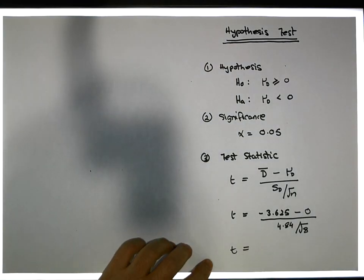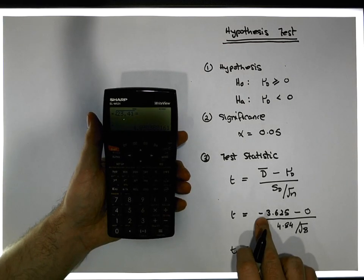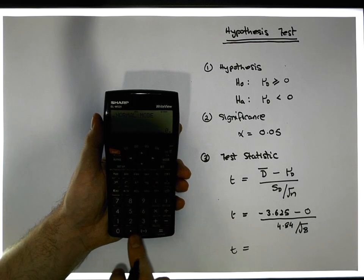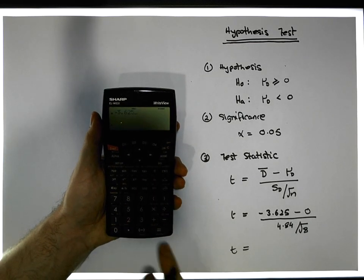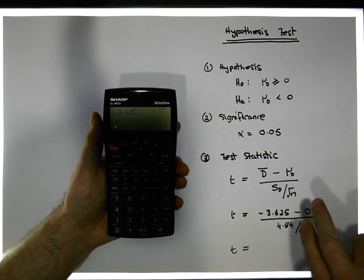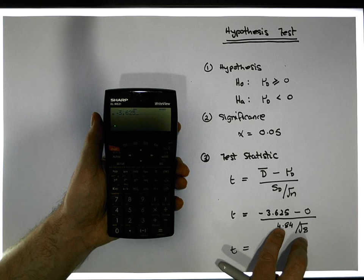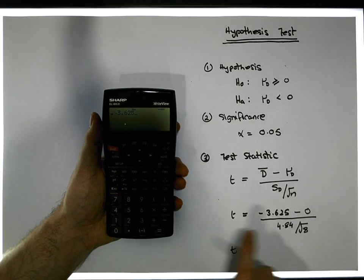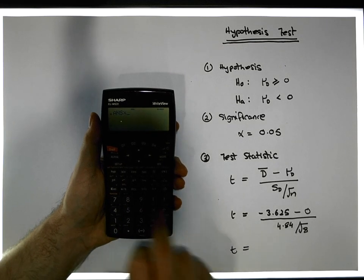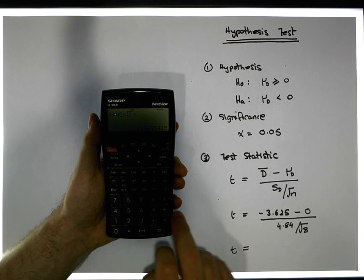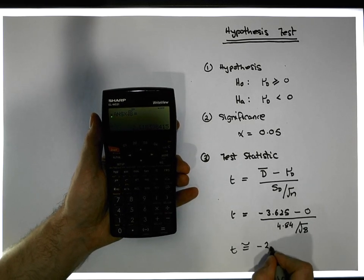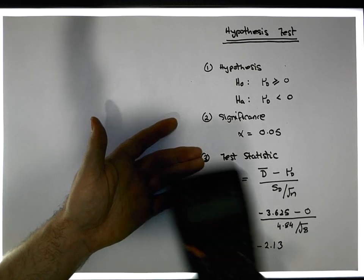The test statistic is negative because minus 3.625 minus zero is minus 3.625. Dividing by a fraction is the same as inverting and multiplying, so we divide by 4.84 and multiply by the square root of 8. Our test statistic is approximately minus 2.13.